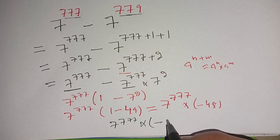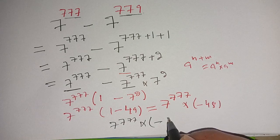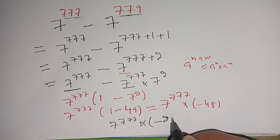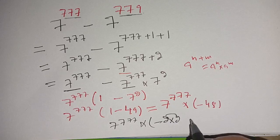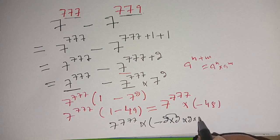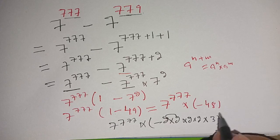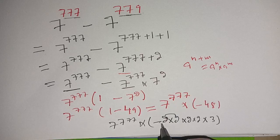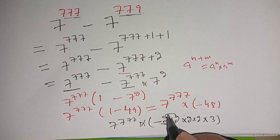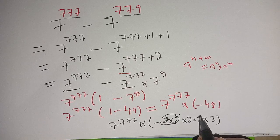48 can be written as 2×2×2×2×3. Thus it becomes 2^4 times 3.